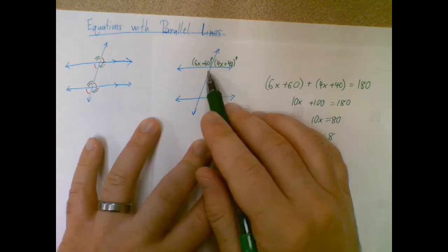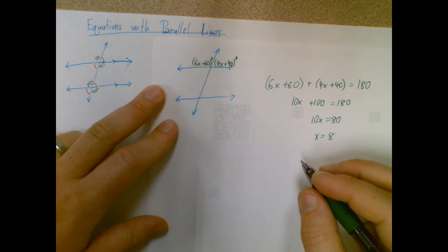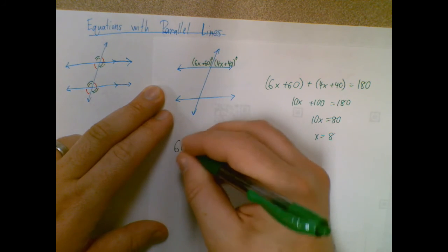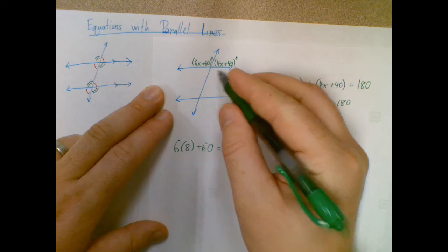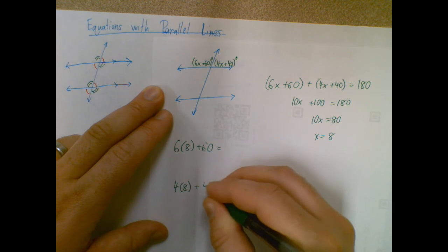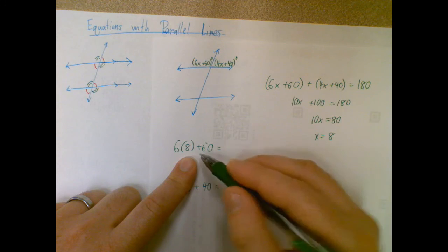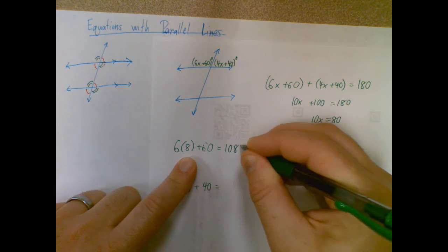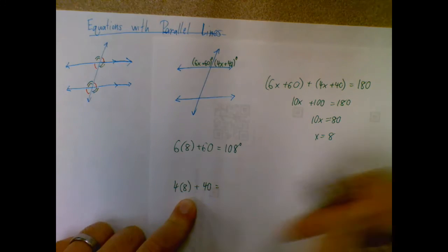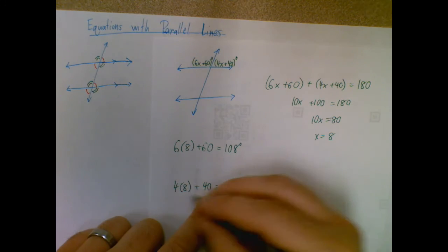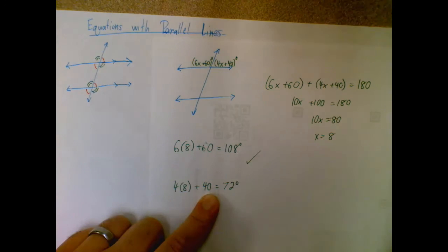Just like last time, I'm not done. I want to plug that back in and make sure they are supplementary, because if they're not, that means I made a mistake. I have 6 times 8 plus 60 for my first one: 48 plus 60 is 108 degrees. Then 4 times 8 plus 40 for my second one: 32 plus 40 is 72 degrees. Those are supplementary—they add up to 180—so I'm good.